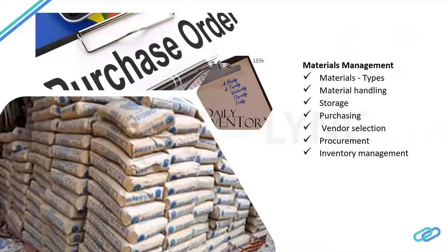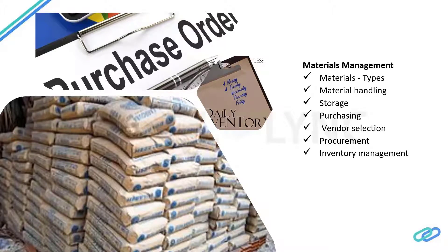Another important aspect is material management. We have to deal with different types of materials and should know how to handle them. For example, we cannot store cement bags in a wet oily place, and we cannot store glass panels vertically one above another. Glass panels should be stored horizontally in an inclined way. These are basic ideas a material manager should have while storing materials.